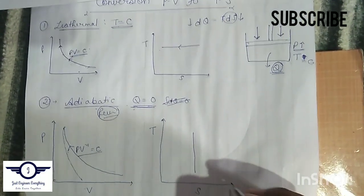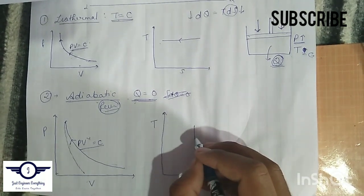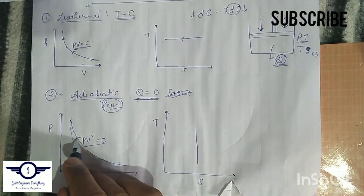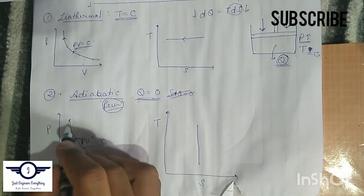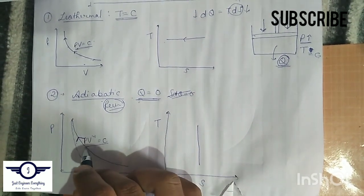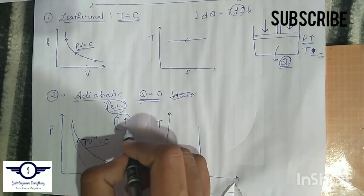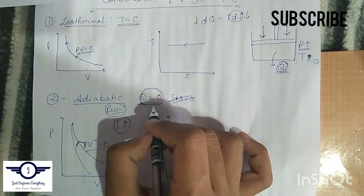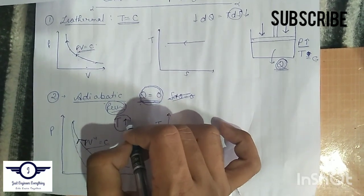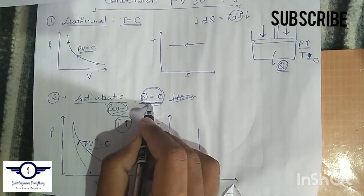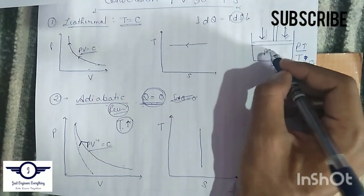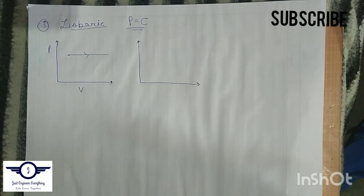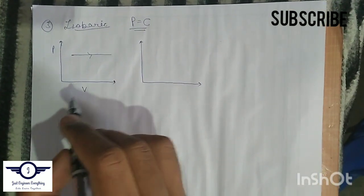We still need to determine the direction — whether temperature increases or decreases. Since pressure is increasing in this process, and no heat is being rejected to maintain constant temperature, the temperature will definitely increase with increasing pressure. Therefore, the direction on the TS diagram is from bottom to top, giving a vertical line moving upward.